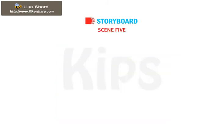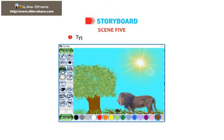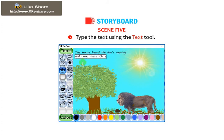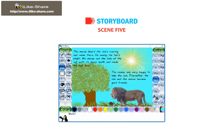Scene 5: Similarly, make changes in the position of the objects for Scene 5. Type the text using the Text tool. Save the drawing with the help of the Save tool.